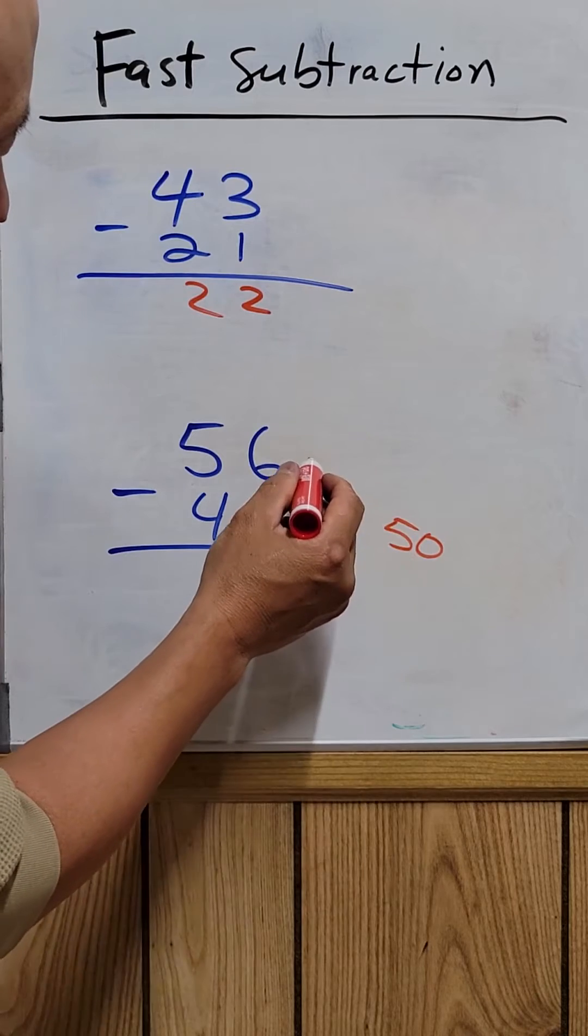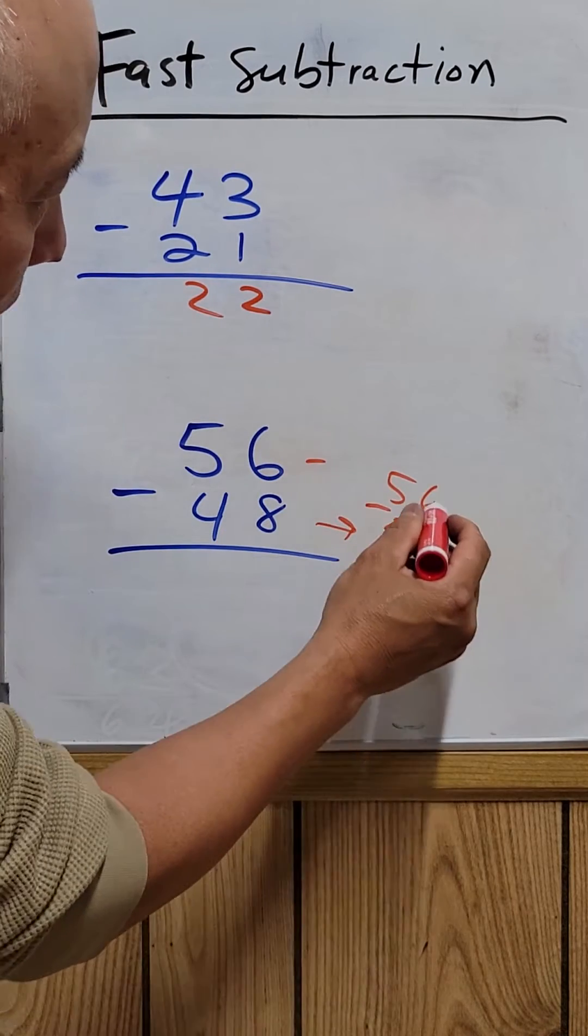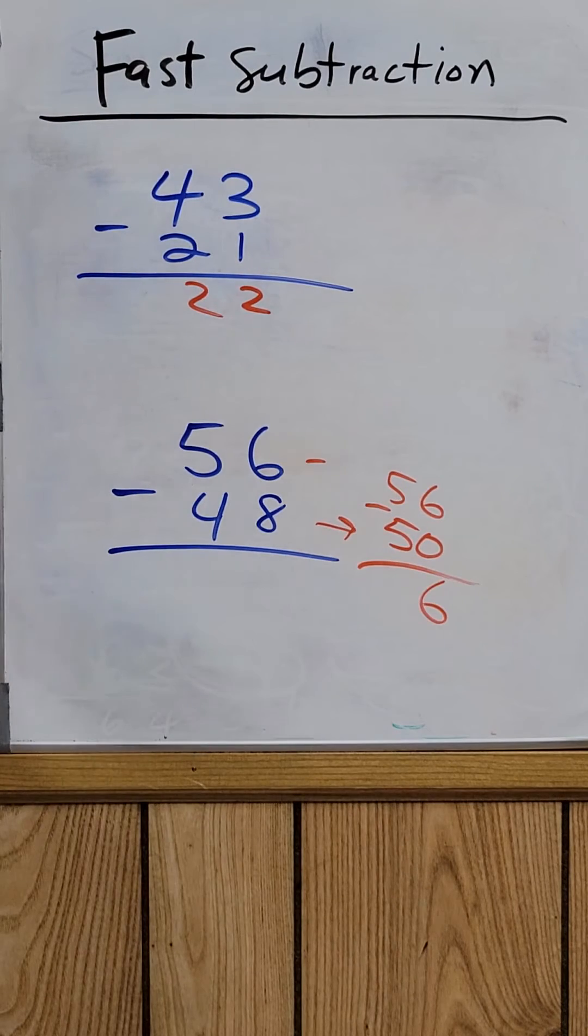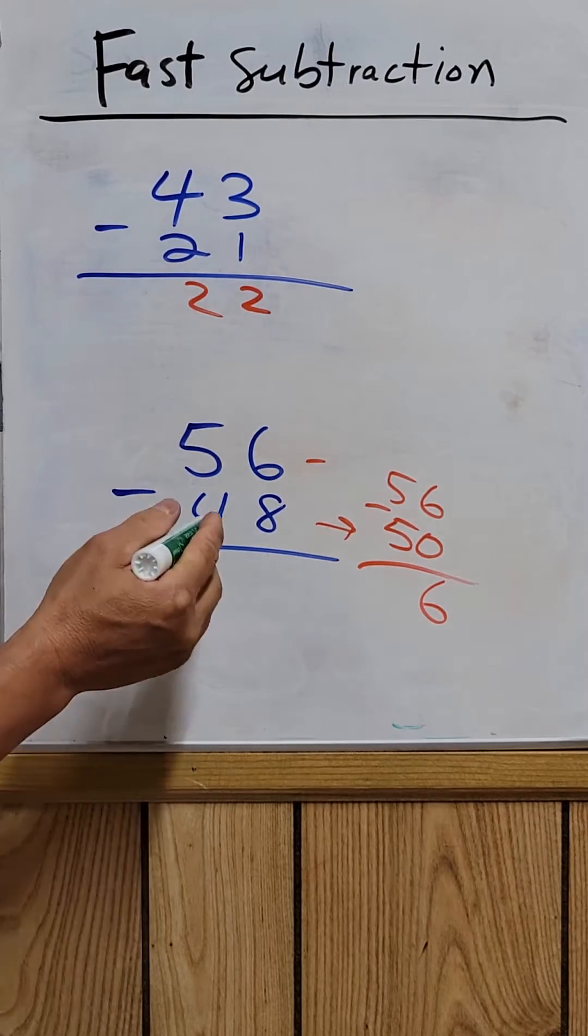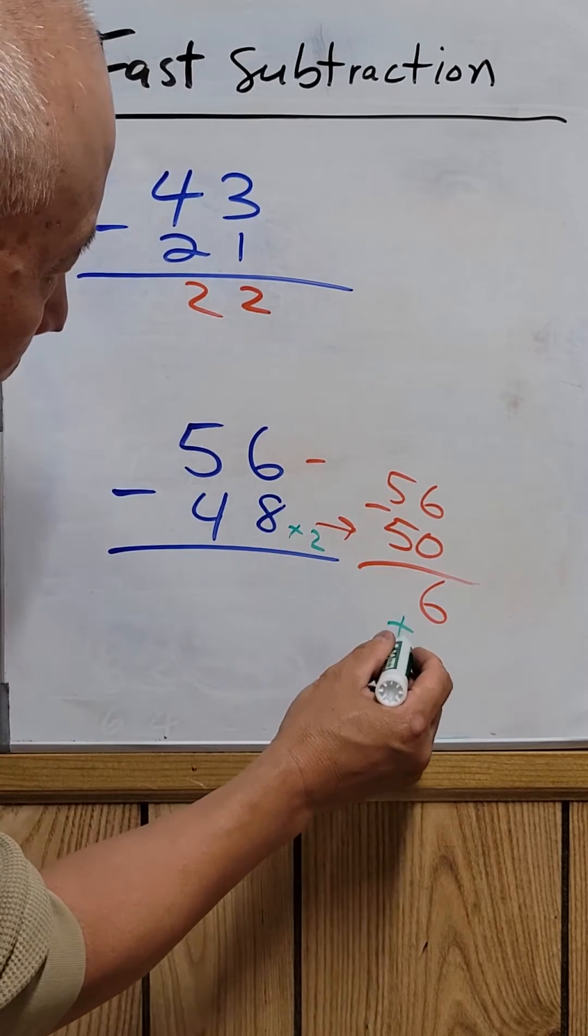So it's easier to subtract this way: 56 minus 50 is 6. So how do you get from 48 to 50? Add 2. So we add 2 right here, so the answer is 8.